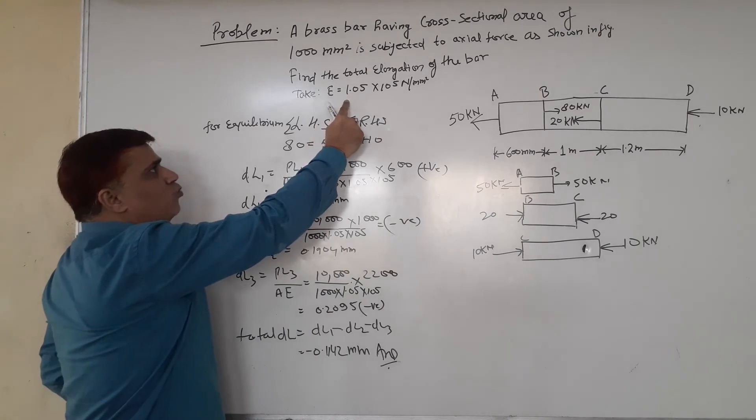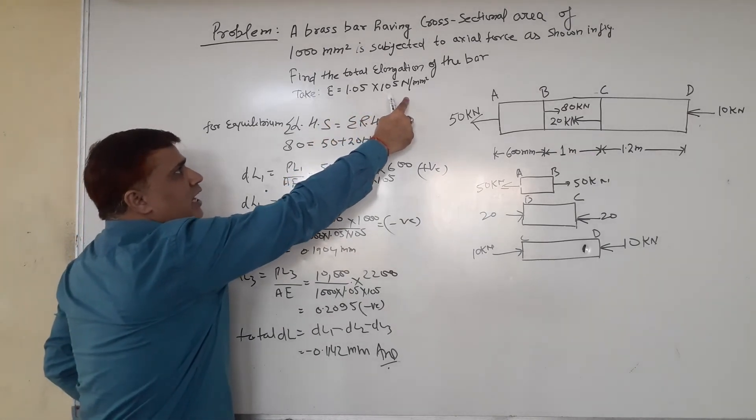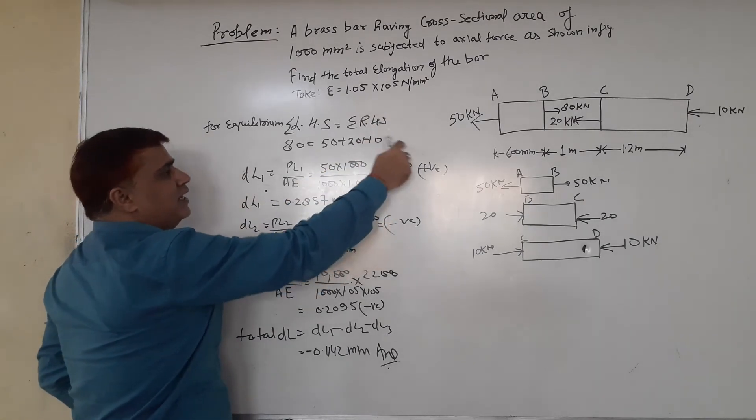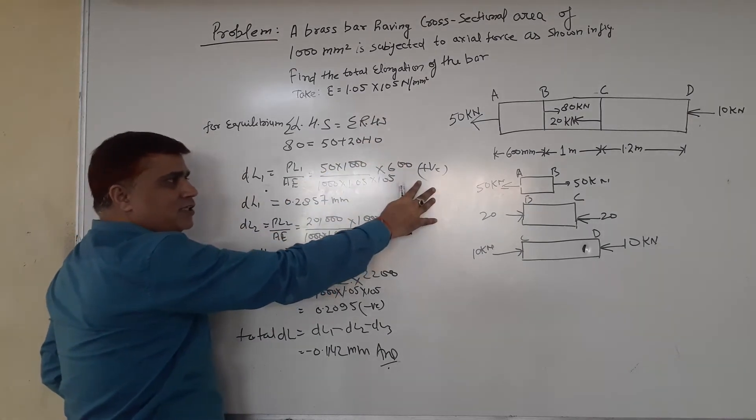Now we multiply by 600 mm. We're considering this positive because this is tensile.